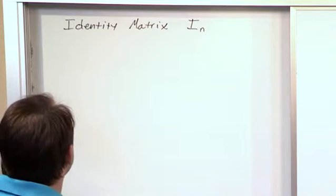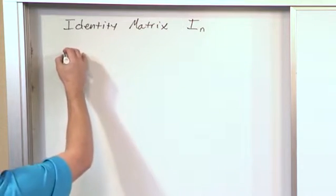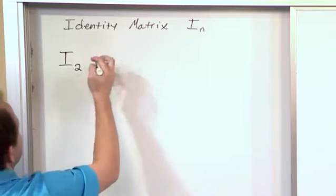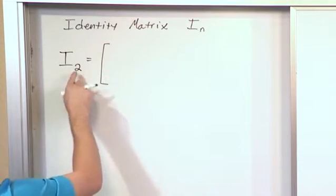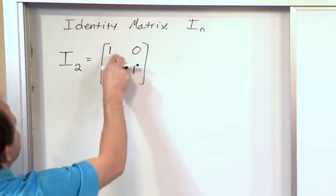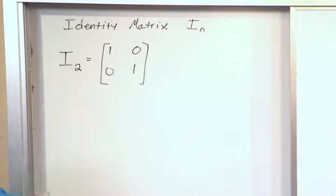You'll understand what the N means in just a second. If I have an identity matrix, I sub 2, notice in this case N equals 2, then it looks like this. Basically, it means a 2 by 2 matrix with the number 1 along the diagonal elements and zeros everywhere else.